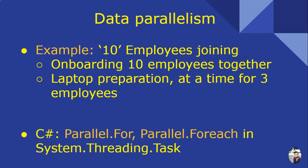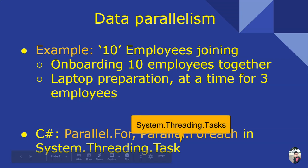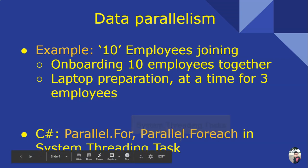In C#, data parallelism can be achieved using Parallel.For and Parallel.ForEach methods in the System.Threading.Tasks namespace. Let us see data parallelism in action.